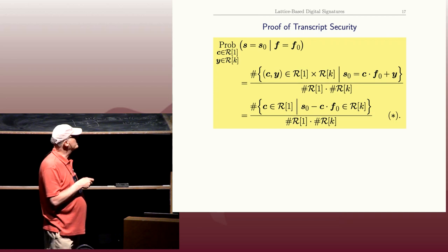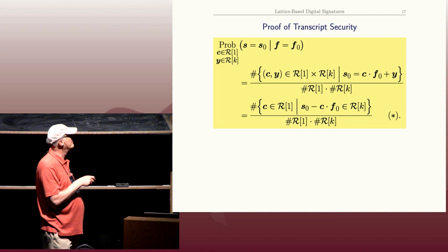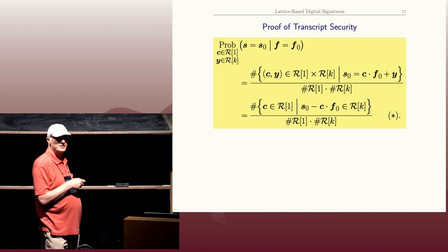So the set on the second line, the number of elements in that set, is simply the number of C values, so that S naught minus C F naught gives a valid Y value, meaning its coefficients are at most K.